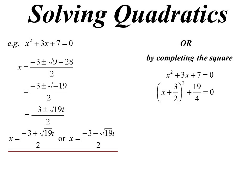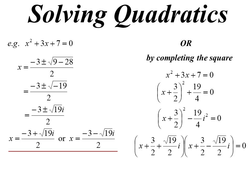That is now the difference of two squares. You might not see it immediately, but if I write 19 on 4 as minus 19 on 4 times i squared, it becomes the difference of two squares. So it factorises as x plus 3 on 2 plus the square root of 19 on 2 times i, multiplied by x plus 3 on 2 minus the square root of 19 on 2 times i.